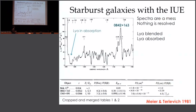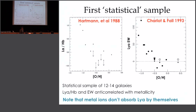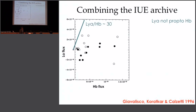Here there's the Lyman-Alpha absorption, and what you're also looking at is a set of cosmic ray hits — kind of nasty. Cosmic ray removal could be quite important when some of your spectra look like this.